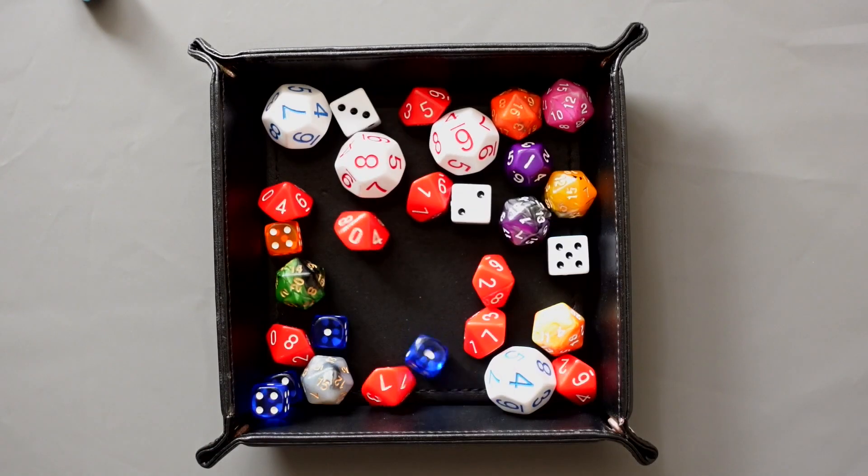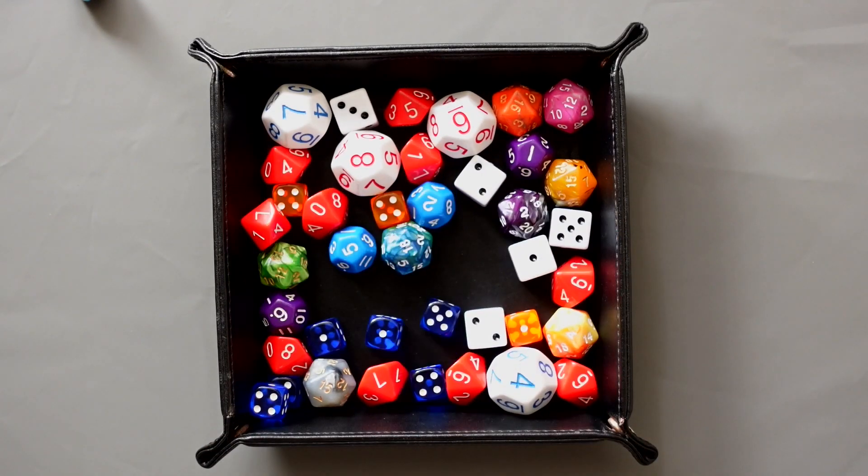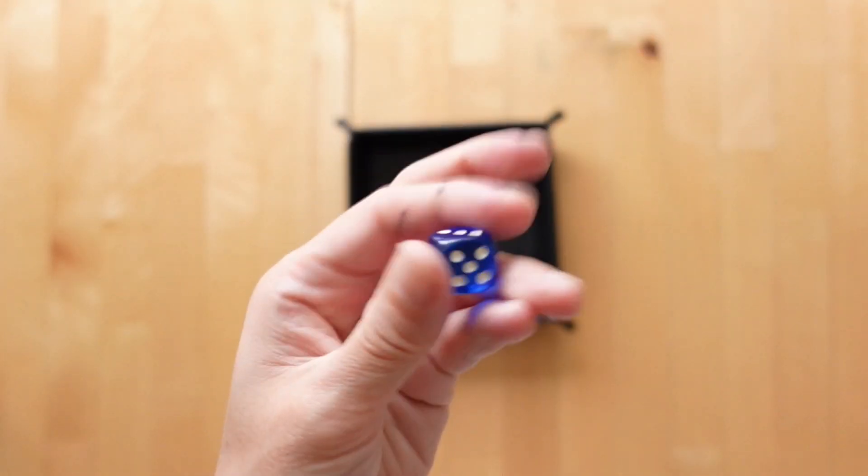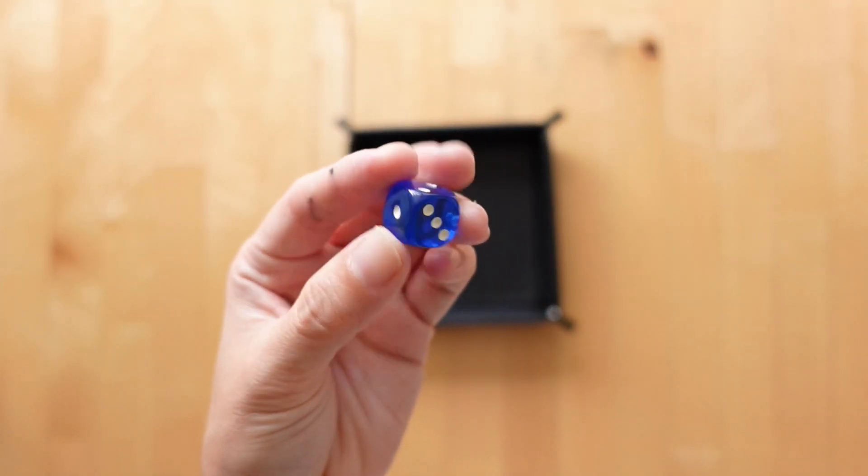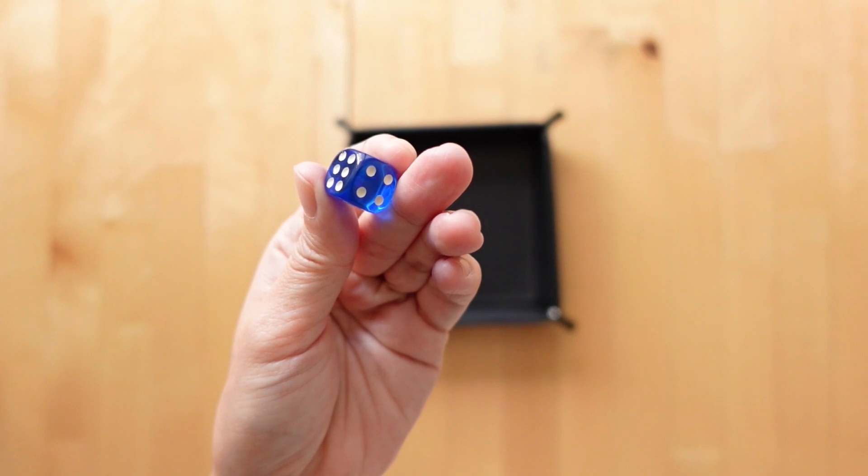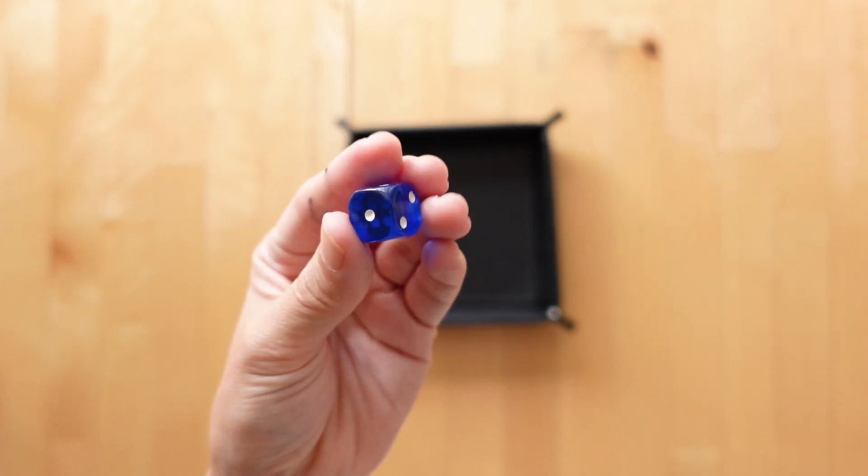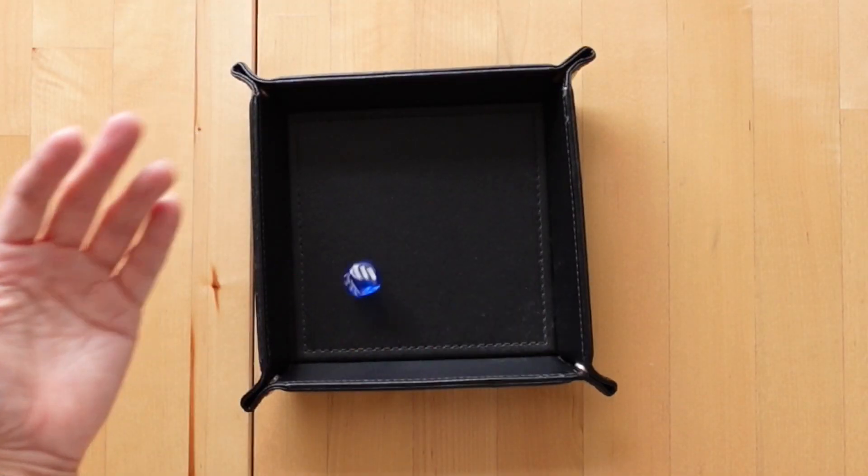I actually want to show you something quite interesting with these dice. Most of the time when folks refer to dice, we are talking about a six-sided die, which we call a D6, and the arithmetic average, we call the mean, is actually three and a half.